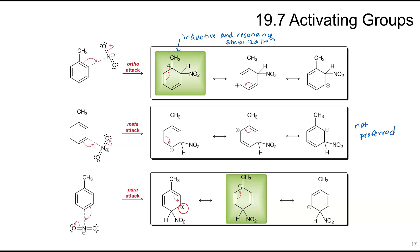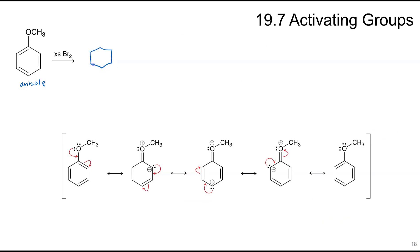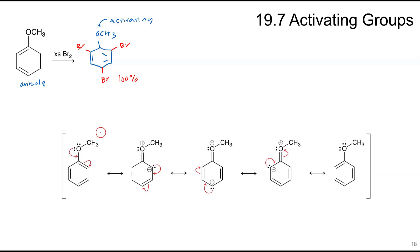With the para attack, the carbocation forms ortho to the methyl group, and we can draw a resonance structure where the methyl group stabilizes that charge inductively. With an activating group such as methyl, it can inductively stabilize the resonance charge. With anisole, this is similar — it is an activating group. With excess bromine, we actually see addition at both ortho and para positions; this is essentially 100% because it is a very activated system. The OCH₃ donates electrons into the ring through multiple resonance structures, so poly-substitution is difficult to avoid.